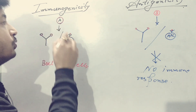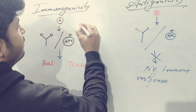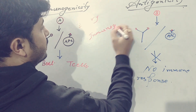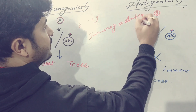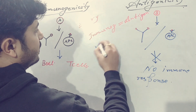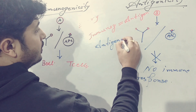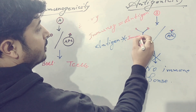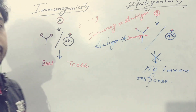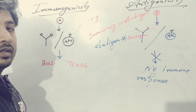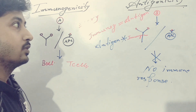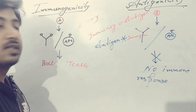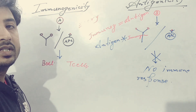So every immunogen is an antigen. Because any immunogen has to be an antigen first — it has to attach to the immune products — to go for the immune response. But in the case of an antigen, it can attach to immune products but it cannot induce the immune response, which is why it is not an immunogen. That is the basic difference between immunogenicity and antigenicity.